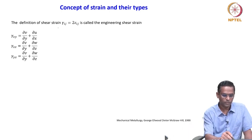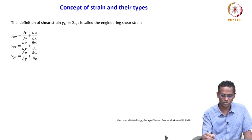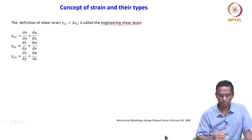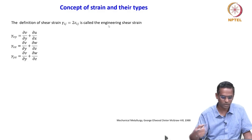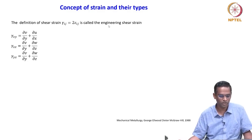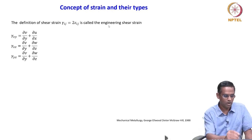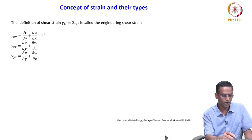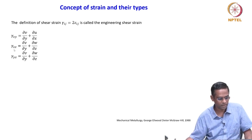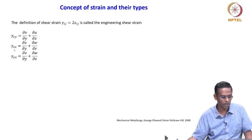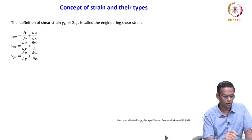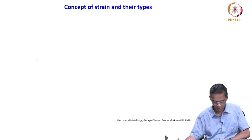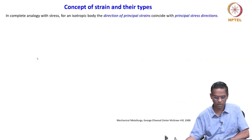The engineering shear strain is defined as γ_ij equals 2·ε_ij. Here γ_xy equals ∂v/∂y plus ∂u/∂x; γ_xz equals ∂v/∂y plus ∂w/∂z; and γ_yz equals ∂v/∂y plus ∂w/∂z. Please note that the engineering shear strain is not a tensor quantity.